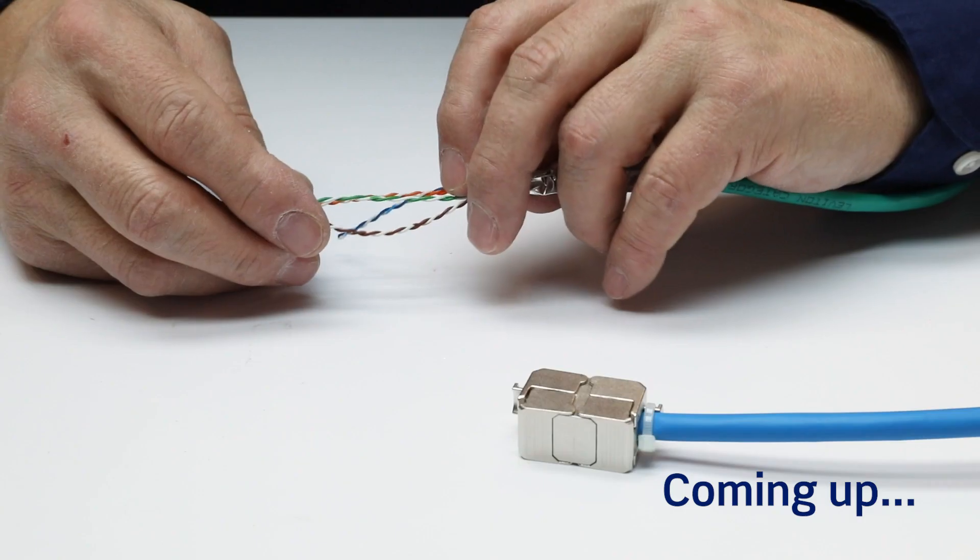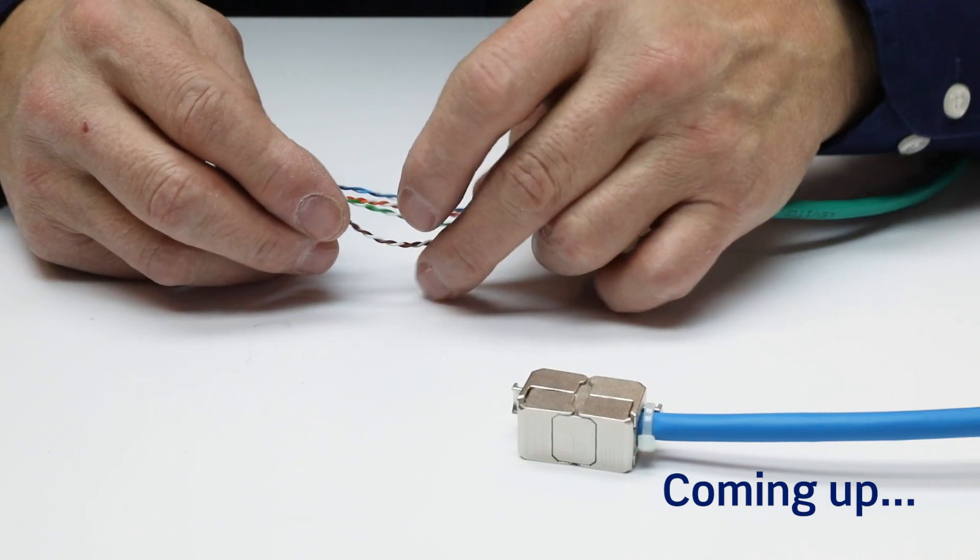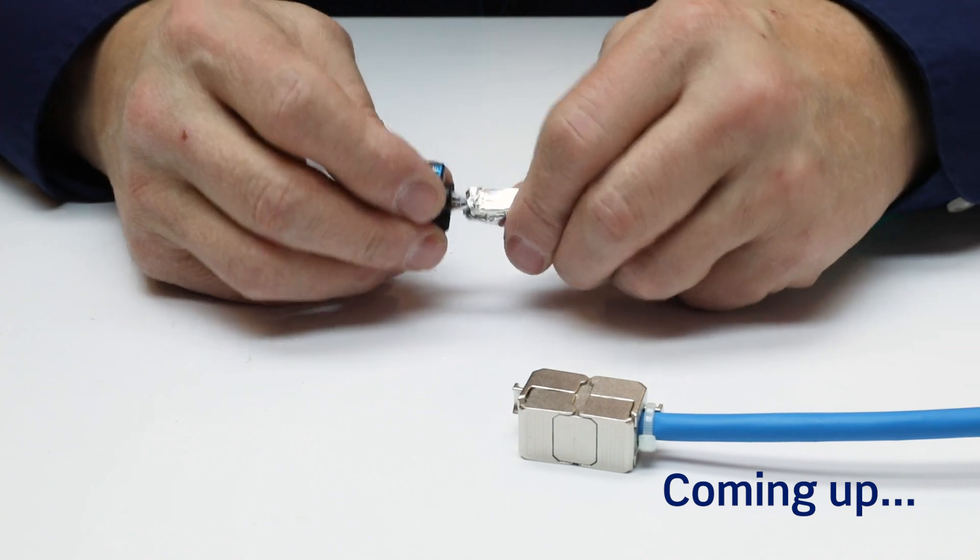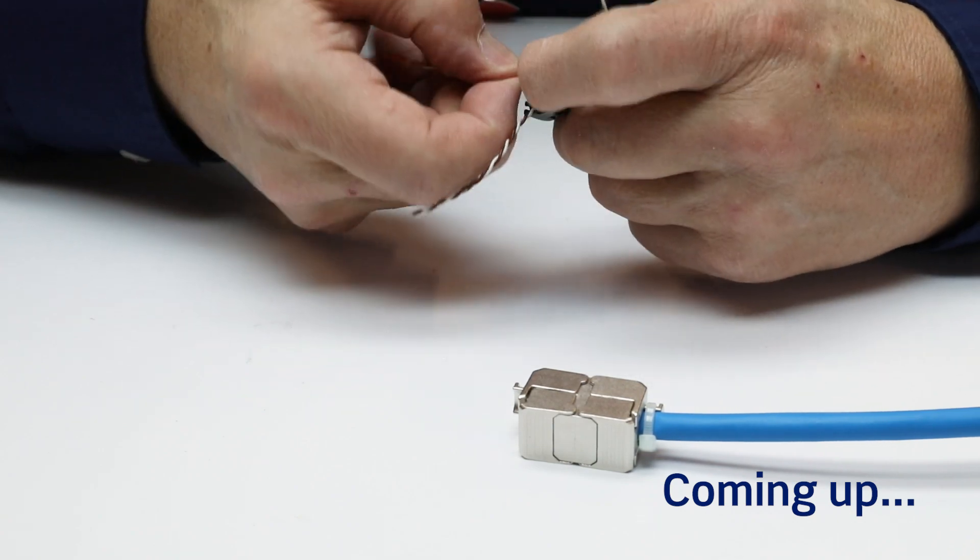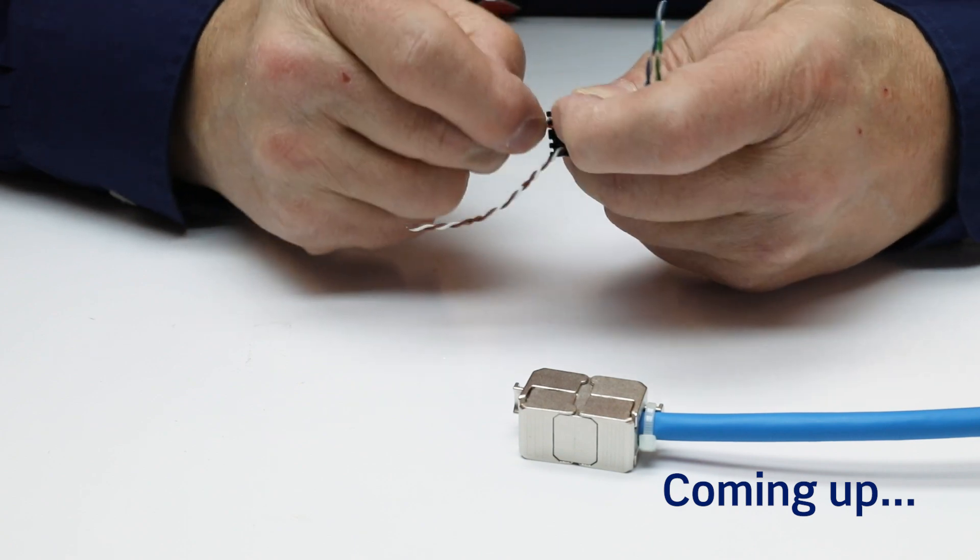Due to the difficulty of field crimping a plug onto cables, performance can vary from crimp to crimp. Also, many field terminated plugs are too large to fit in some devices.